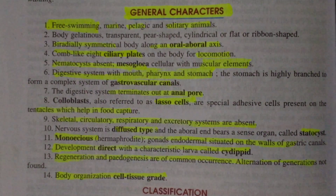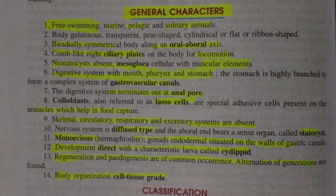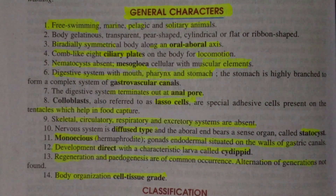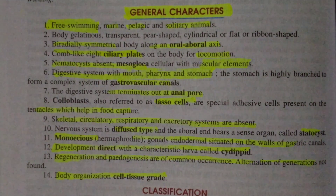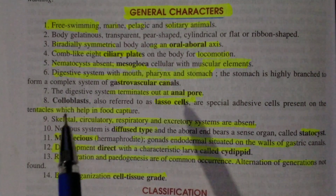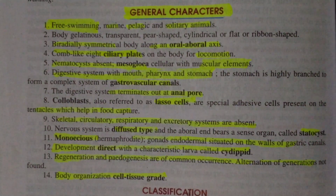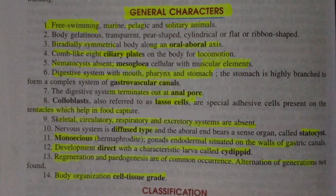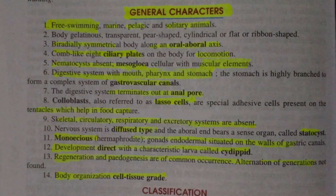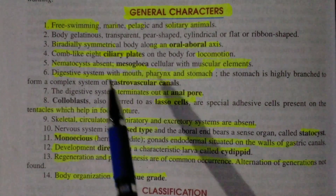They are pelagic and solitary animals. Solitary means living single (akela) — a single individual on the surface layer of water. So the first point is: all individuals found in the minor phylum Ctenophora are free-living, marine (living in seawater), pelagic (swimming on the surface layer), and solitary (akela).